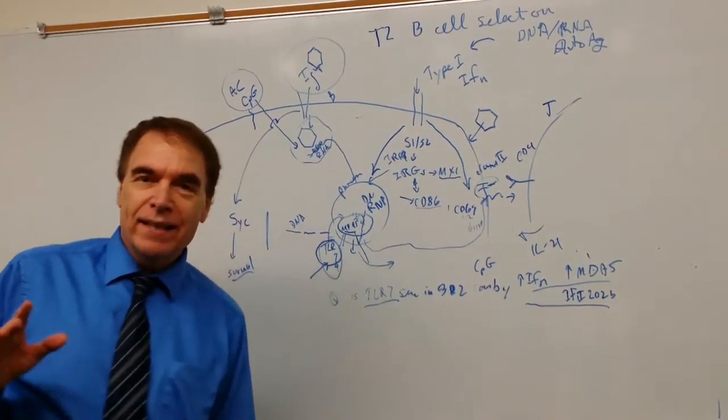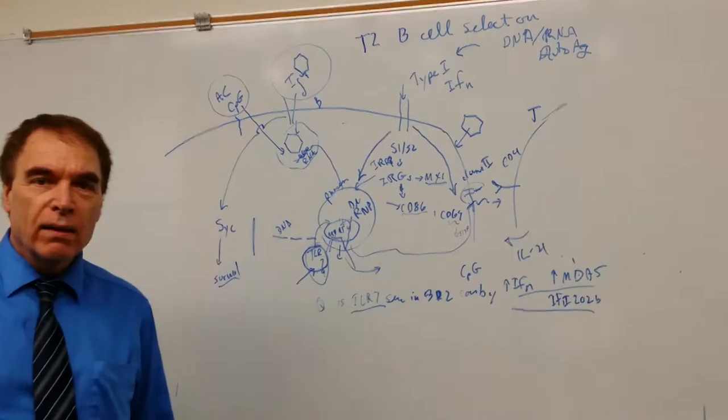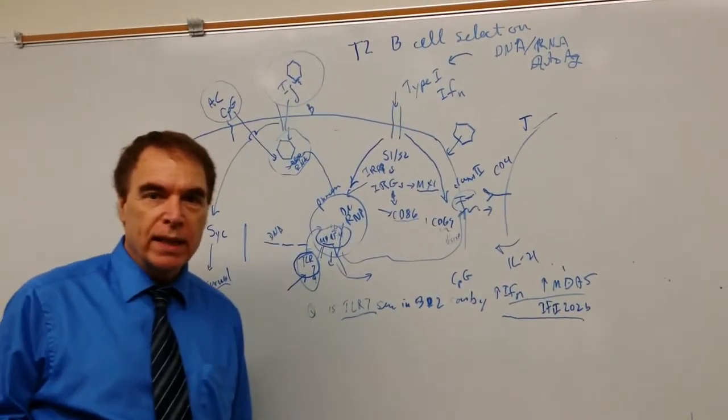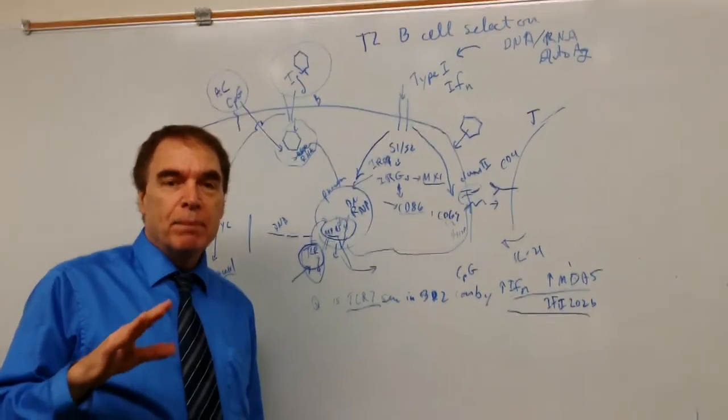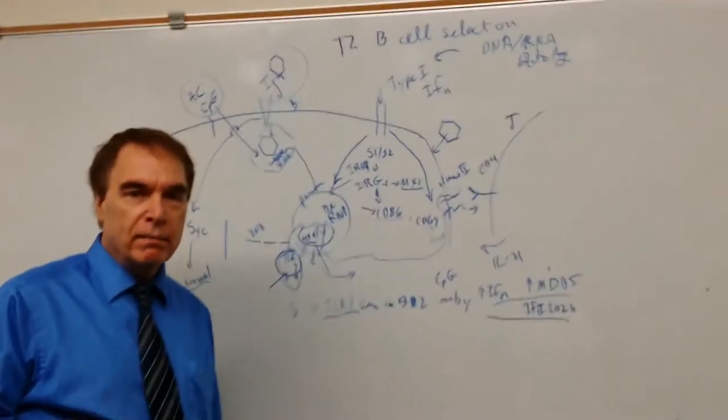This is a new model for why we get autoantibodies to DNA and RNA, and it puts together a few things that have already been known.